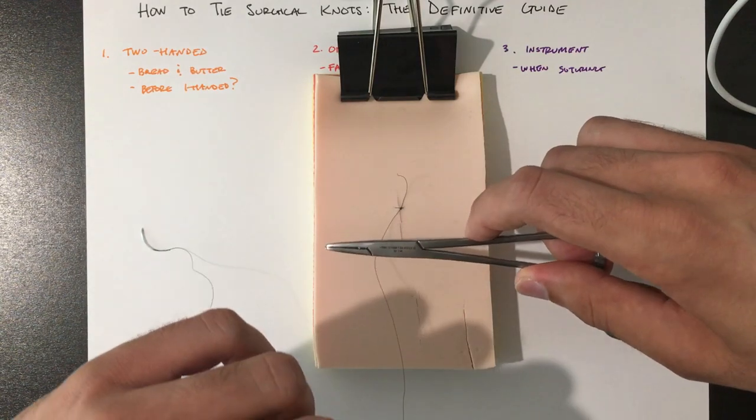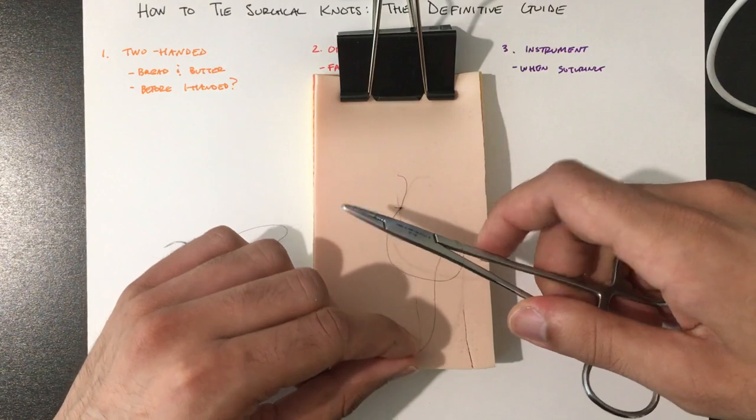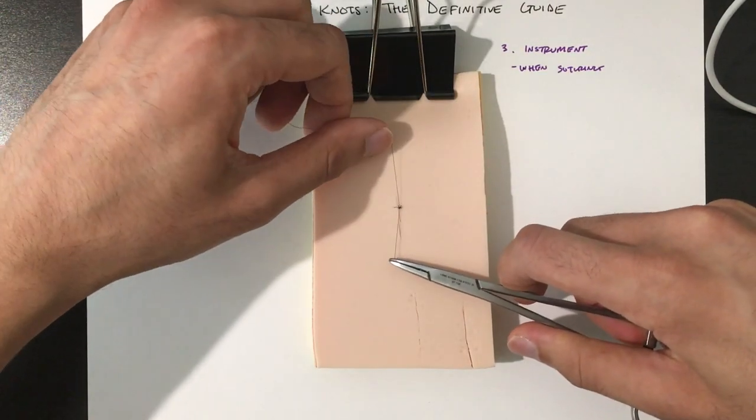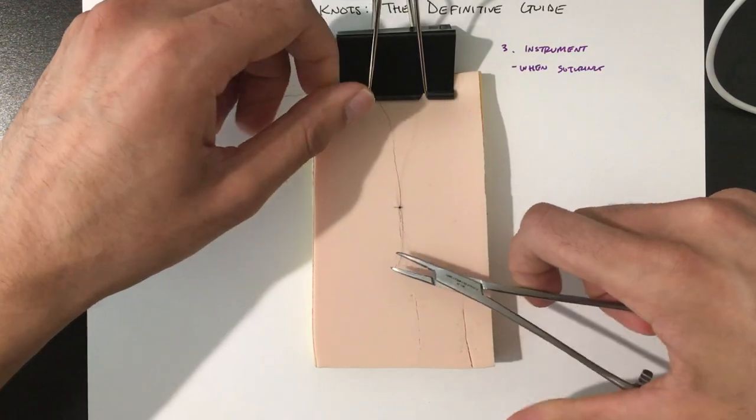We're in the middle, wrap from outside in, grab the short end, and pull through. Take a look.